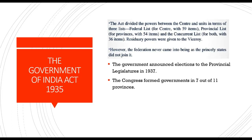The act divided powers between the center and units in terms of three lists: the federal list for the center with 59 items, the provincial list for provinces with 54 items, and the concurrent list for both with 36 items. The residuary powers were given to the viceroy. Even now we have the central list, the state list, and the concurrent list.